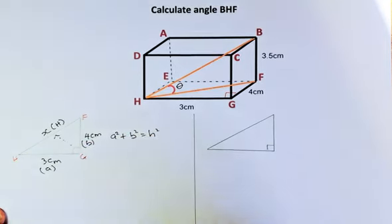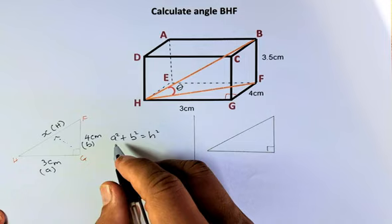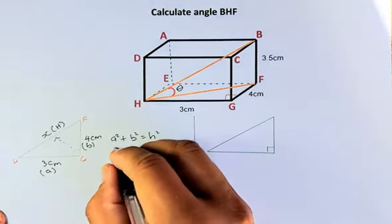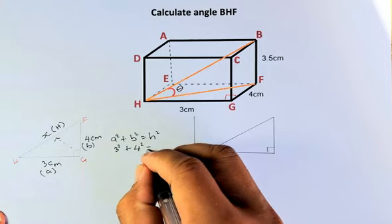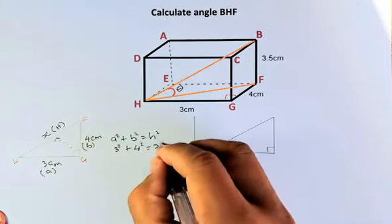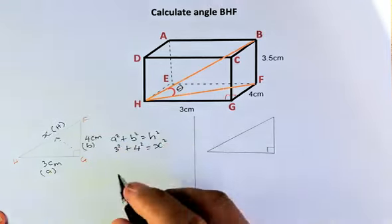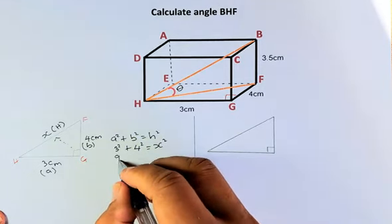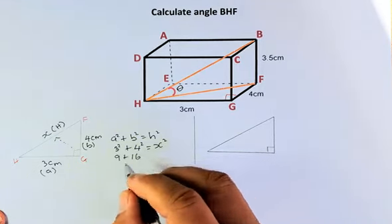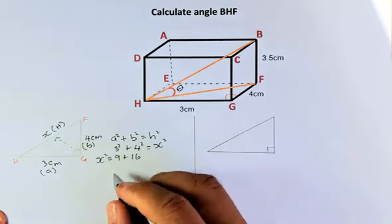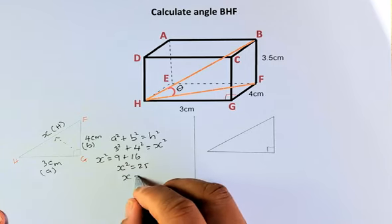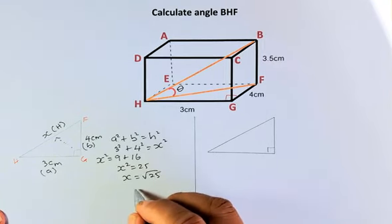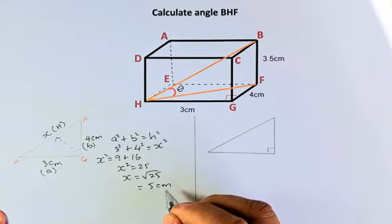Next step, we are going to substitute the value. Instead of A, we're going to replace with 3 squared. Instead of B, we're going to replace by 4 squared. And instead of H, we're going to replace by X squared. Then you're going to put in your calculator. 3 squared is 9, 4 squared is 16. That is equal to X squared. So X squared equals to 25. And then to find your X, you square root 25. And the answer is going to be 5cm.